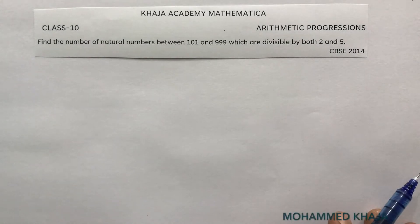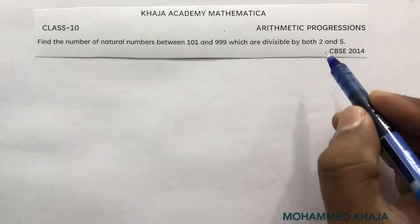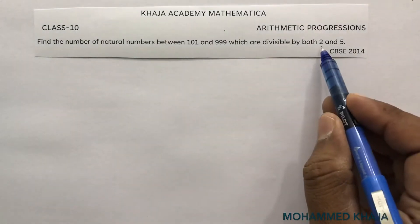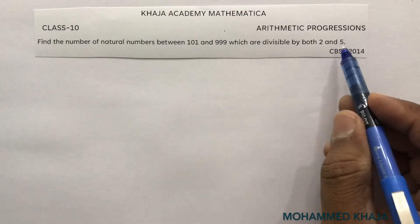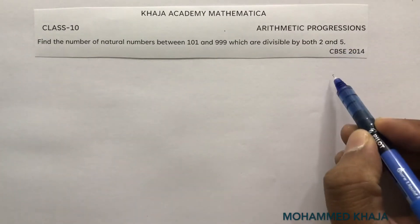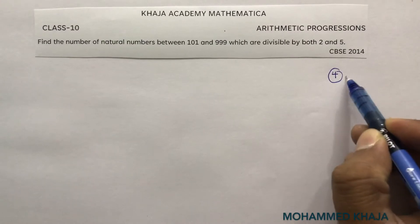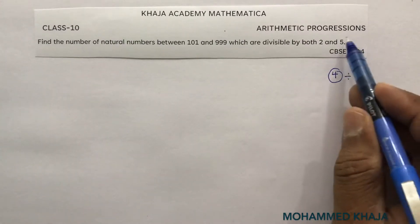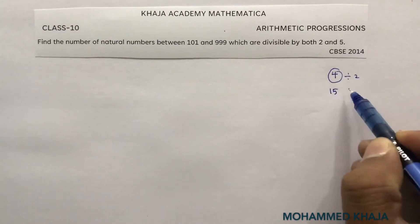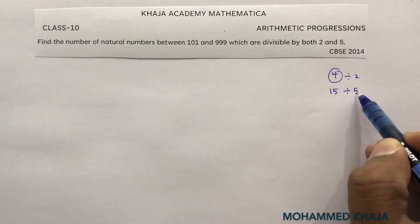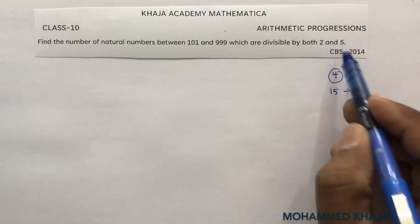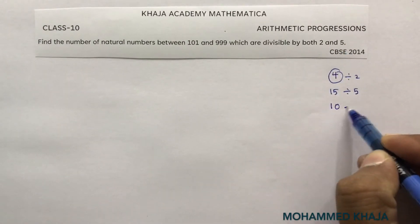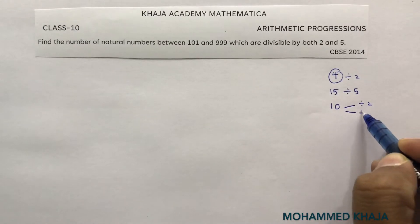Find the number of natural numbers between 101 and 999 which are divisible by both 2 and 5. A number divisible by both 2 and 5 is divisible by 10. For example, 4 is divisible by 2 but not by 5, and 15 is divisible by 5 but not by 2. So we need multiples of 10, which are divisible by both 2 and 5.